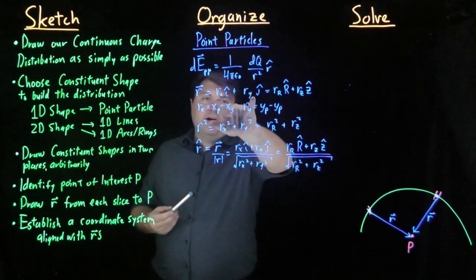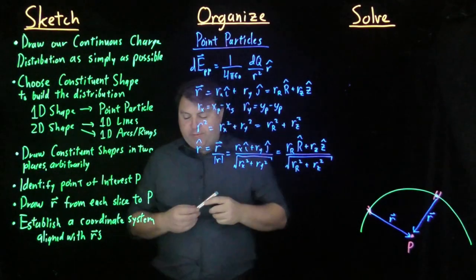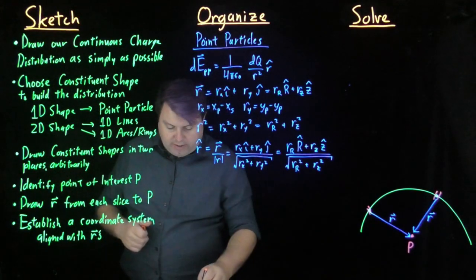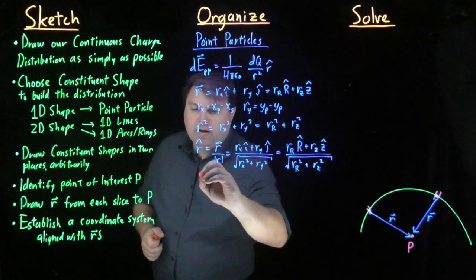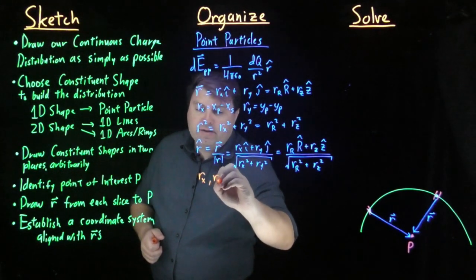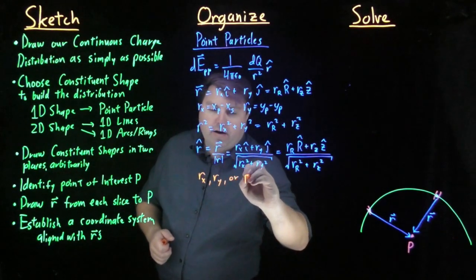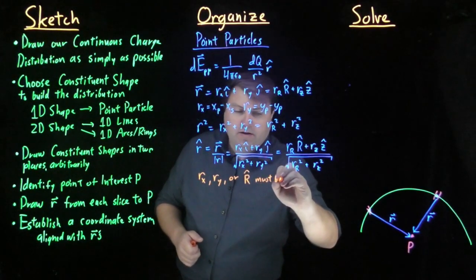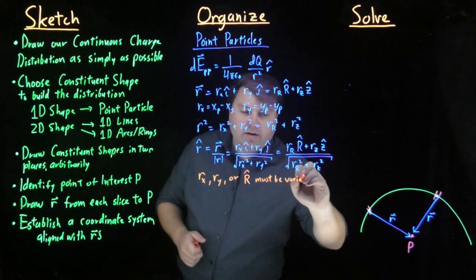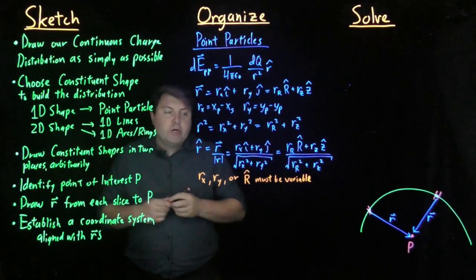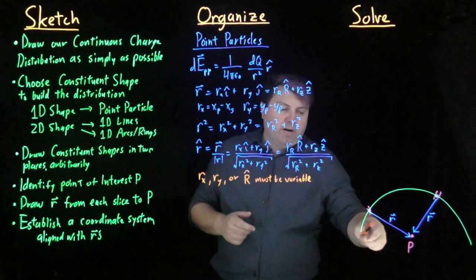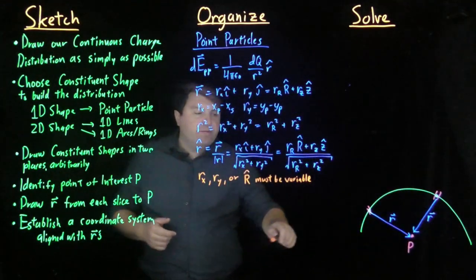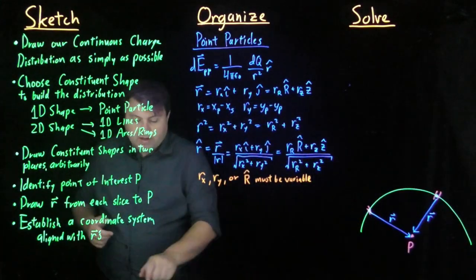We've dealt with r_x i hat plus r_y j hat for a couple weeks now. But what's important for all of this is that r_x, r_y, or the direction r hat must be variable. We want this single definition of r vector to define all possible slices, and so we need a variable in which we are going over this.